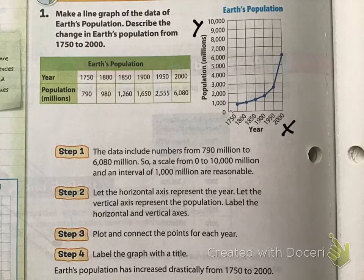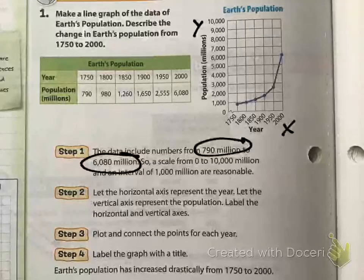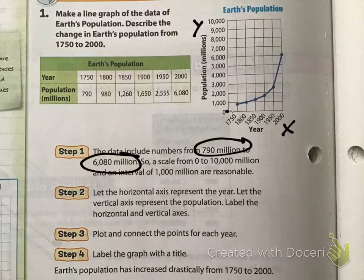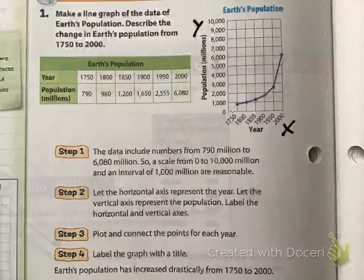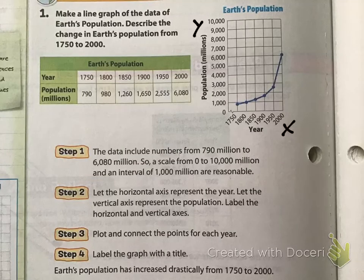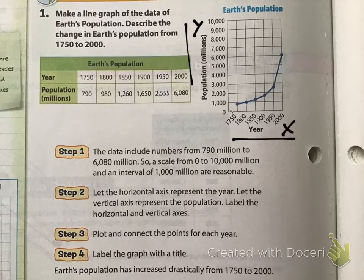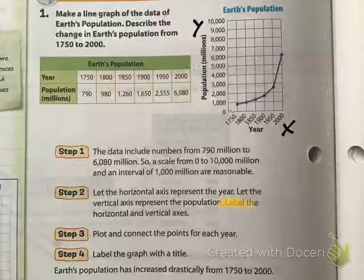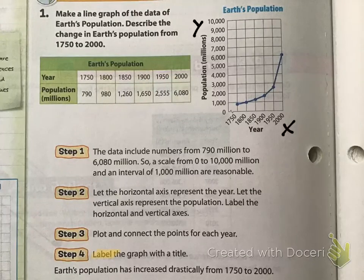When we graph this we find these points — it goes way up, it's actually called an exponential graph. The data includes numbers from 790 million to 6,080 million, so I would make the graph from zero up to 7,000, going up in increments of 1,000. Let the horizontal axis represent the year and the vertical axis represent the population. Always label your axes, then plot and connect the points.